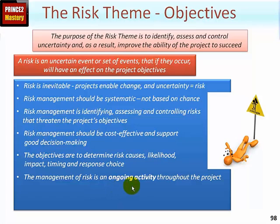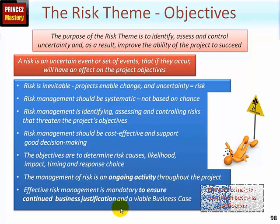Prince2 has several responses for either negative threats or positive opportunities. The management of risk is an ongoing activity throughout the project — risk identification should not just occur at the beginning. Throughout the life of the project, risks may change: they may become more or less likely, or their impacts may differ. New risks will also arise, and part of risk management is implementing responses and ensuring they have the desired effect. Effective risk management is mandatory, linked to the Prince2 principle of continued business justification.